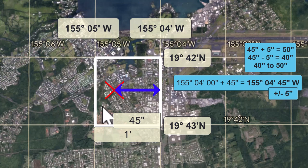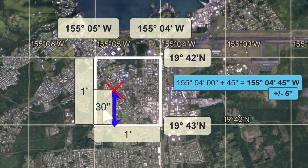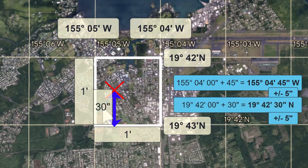Now let's look at latitude. Latitude is increasing as we go north, and it looks like X is close to the halfway point between the two latitude lines, which are also one minute apart. Half of a minute is 30 seconds, again with an uncertainty of about plus or minus 5 seconds. We could also use a ruler to be more precise, in which case we would have less uncertainty.